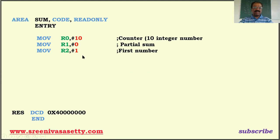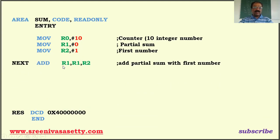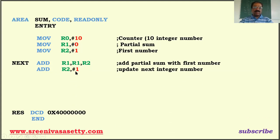ADD R1, R1, R2 — R2 contains 1 (the first number) and R1 contains the partial sum (initially zero). So zero plus one equals one, and one goes to R1. This means sum equals sum plus the current number. Then ADD R2, R2, 1 increments R2: one plus one equals two, so R2 becomes two — updating to the next integer.